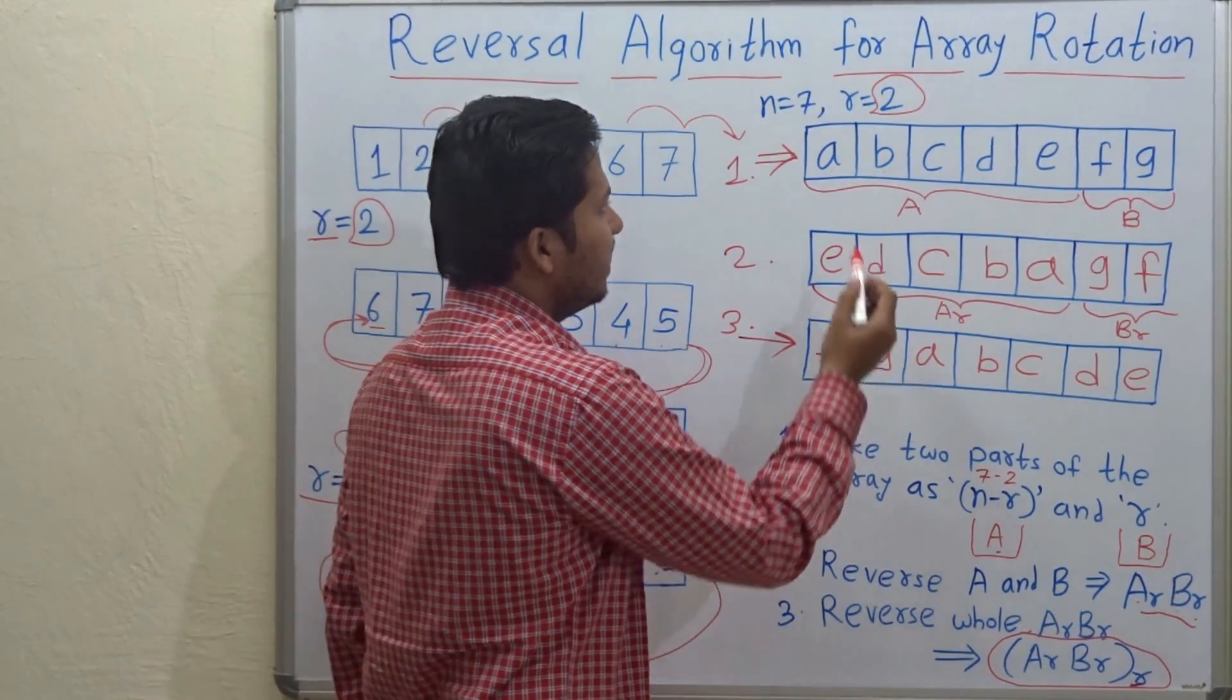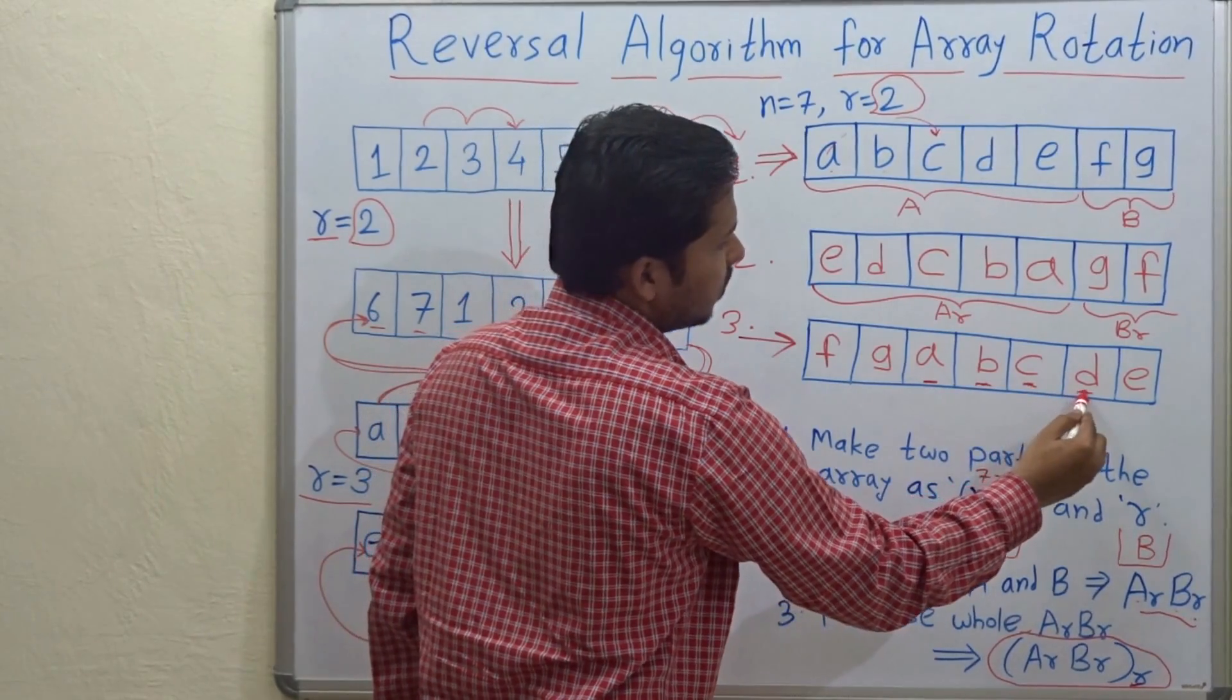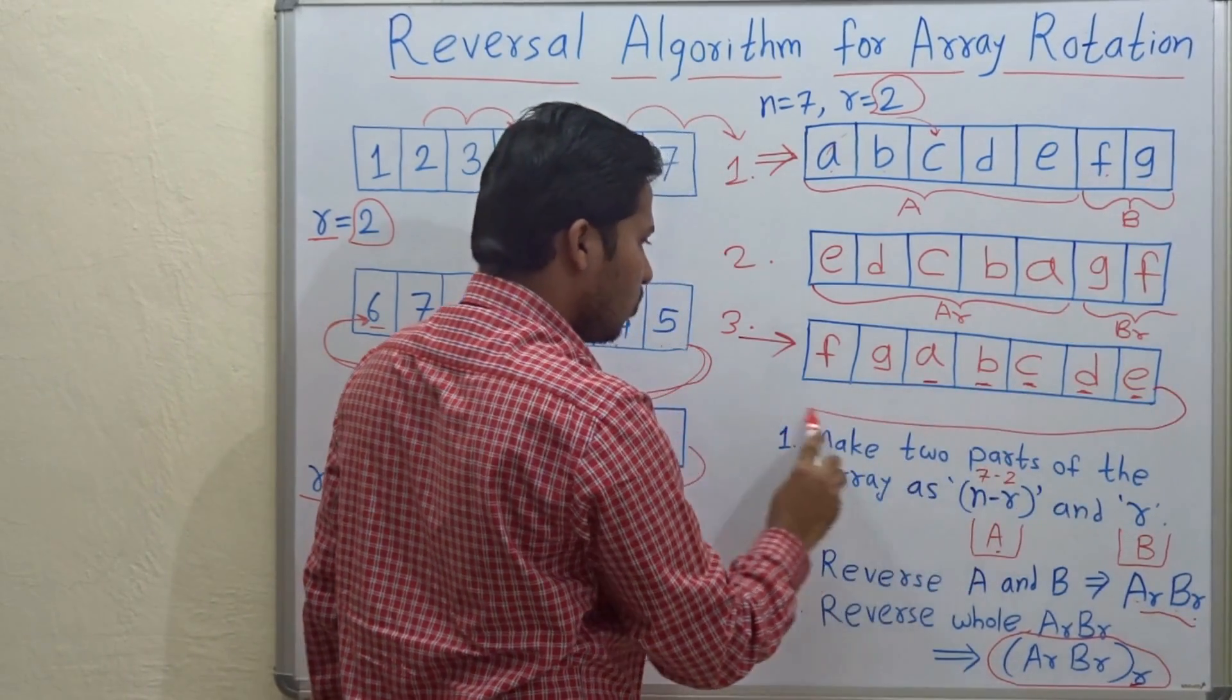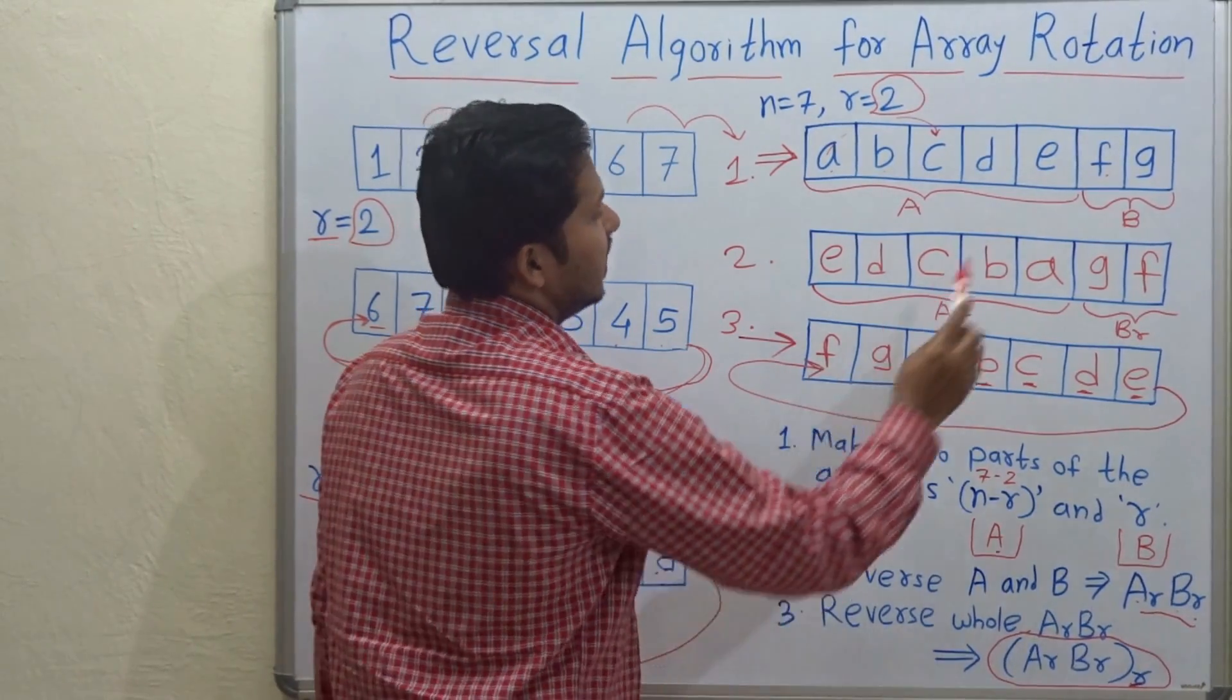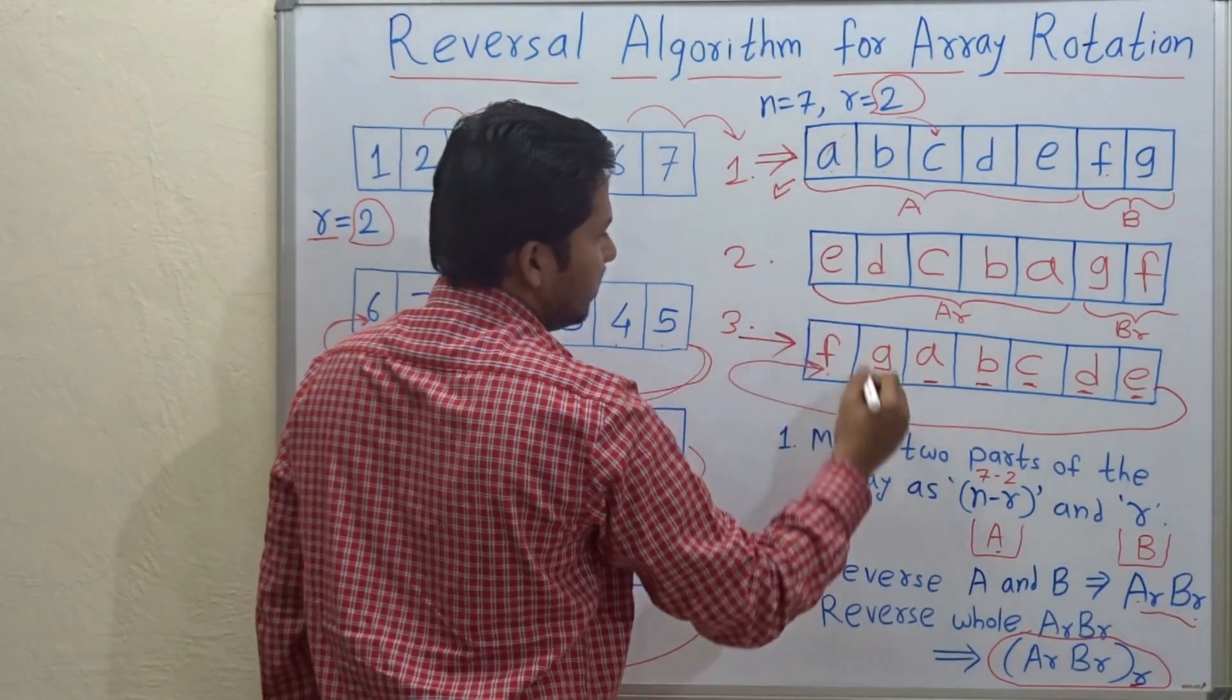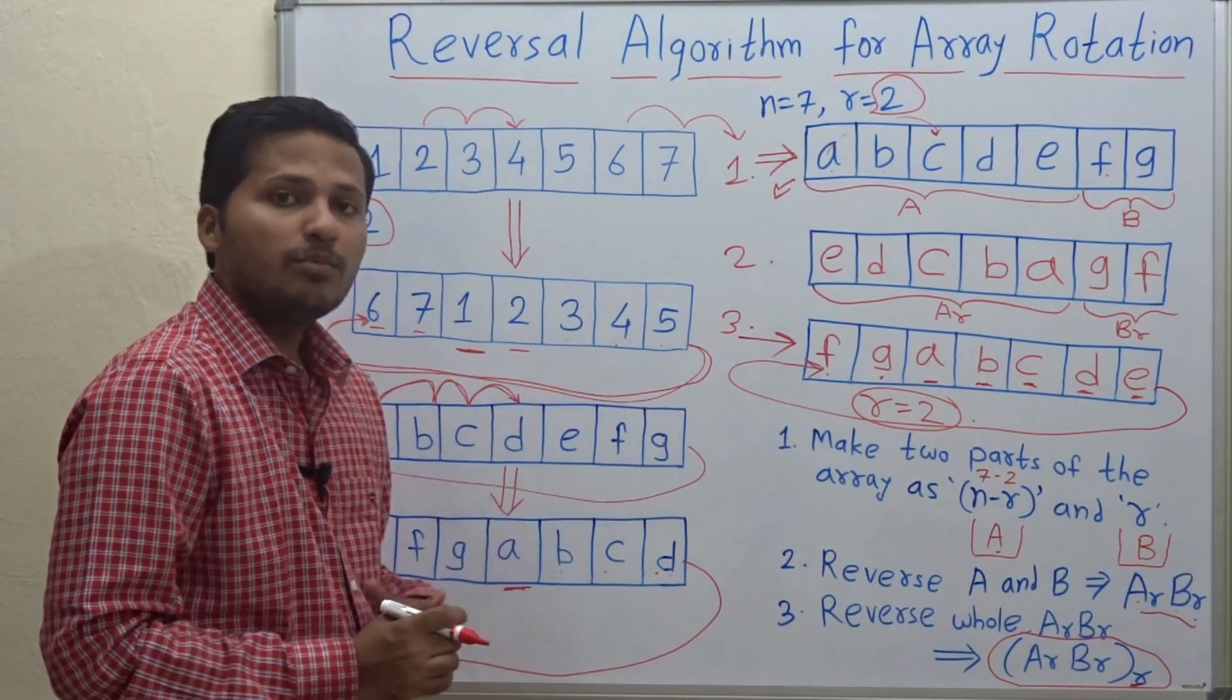So let's see is the answer correct. So see here A is pushed forward to the right by two places. Yes. And all other elements are displaced forward to the right and the end elements F and G are rotated and they came at the beginning that is F and G, here F and G. Yes. So this array is rotated by two places. So this is how we rotate an array by given number of places.